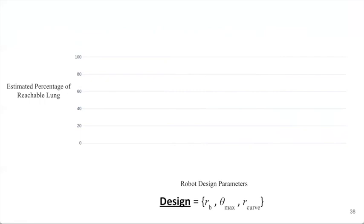What we'll measure on the y-axis is the estimated percentage of the lung that is reachable for a given design, where a design defined on the x-axis is a triple of the three parameters we've been discussing. For a given design, we'll measure this reachable score as an average across the five patients' lungs.